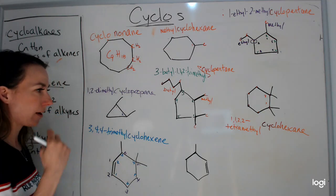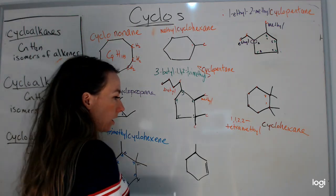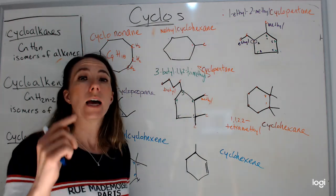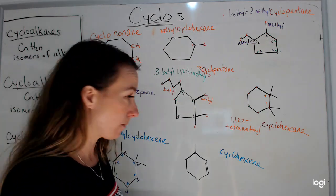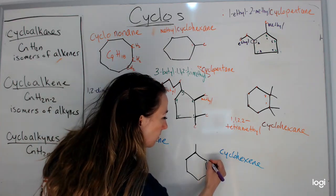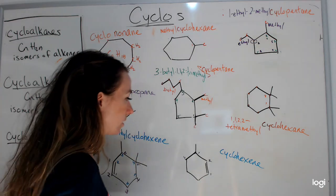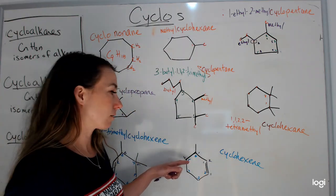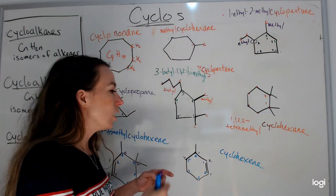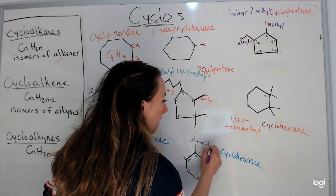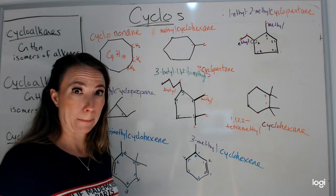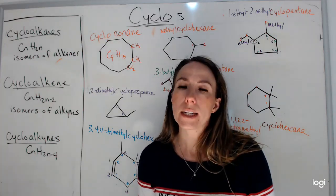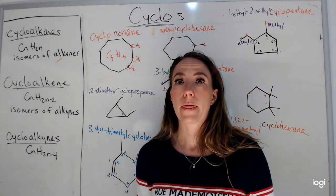Here's another cyclohexene — a circle of 6 carbons with a double bond. The double bond is between carbons 1 and 2, so no number needed in the name. Following the purple numbering puts the methyl on carbon 3, while the blue would put it on carbon 6. Carbon 3 is lower, so I follow the purple system: this is 3-methylcyclohexene. For organic chemistry at this level, cyclo will always be the parent chain, not a branch — cyclo branches are covered in university.